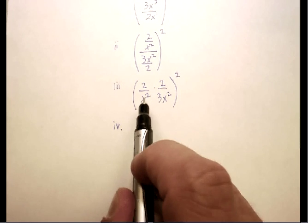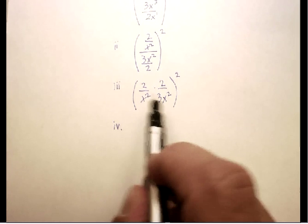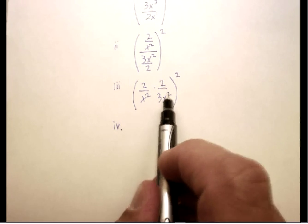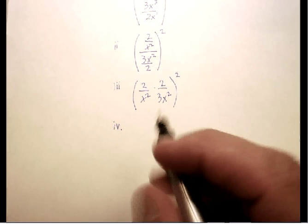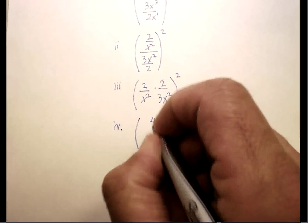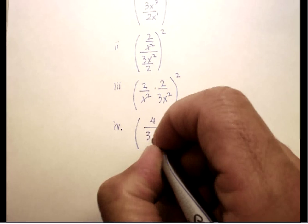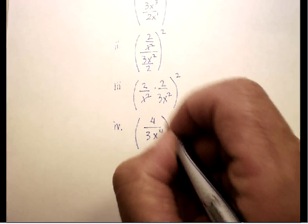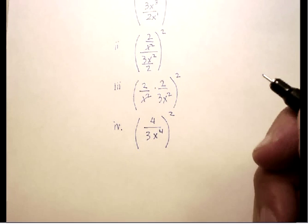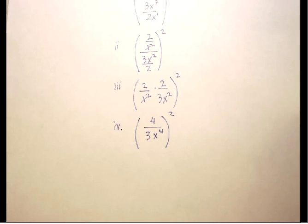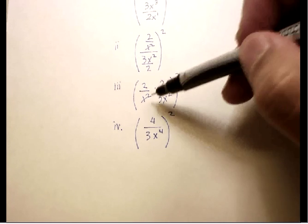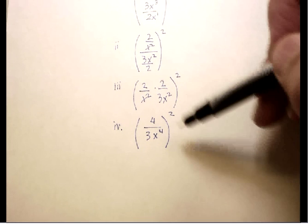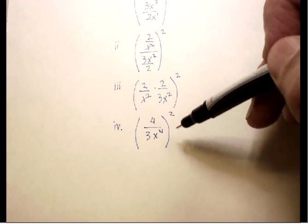I'm going to use the product rule because these bases are the same, which means I can add the exponents and multiply the numerators. So I get 4 to the 3 times x to the 4th, quantity squared. This is getting simpler all the time. Notice by taking apart little simple problems along the way, I'm simplifying my problem.